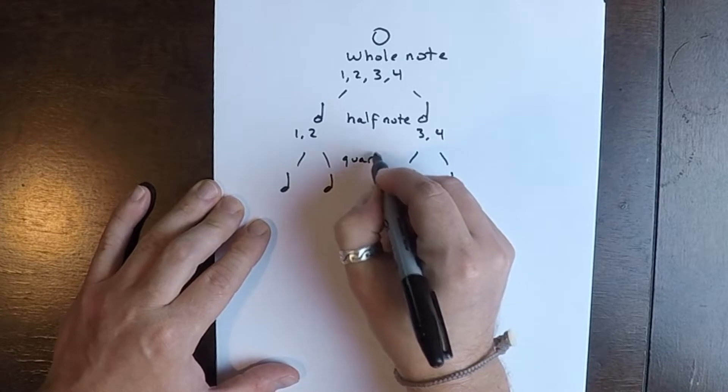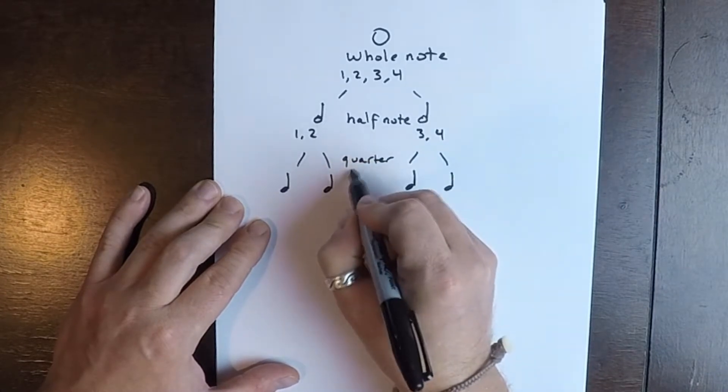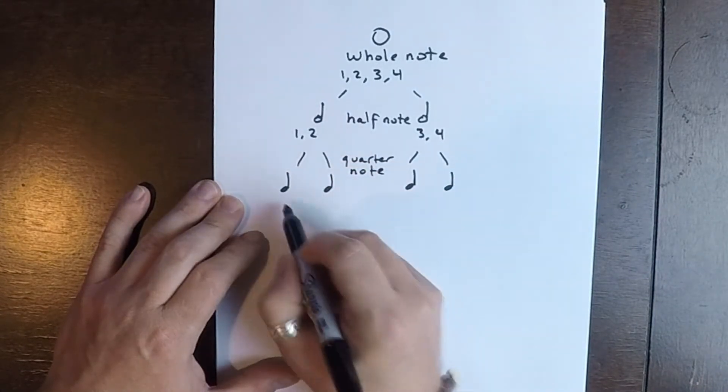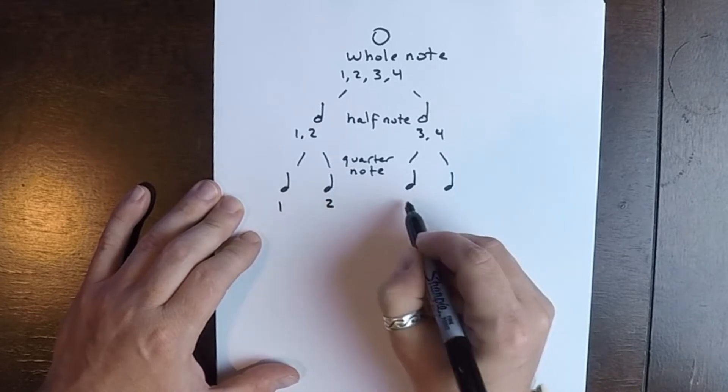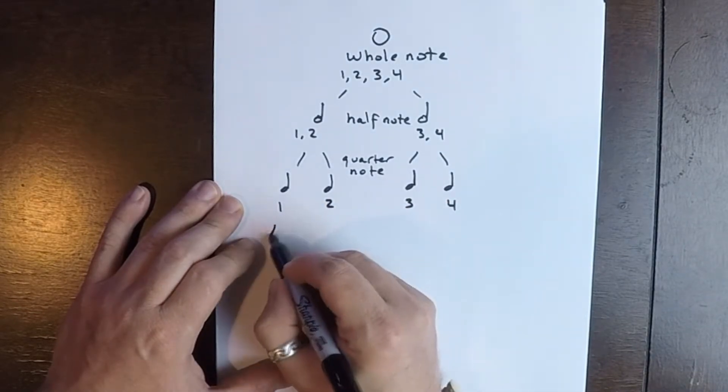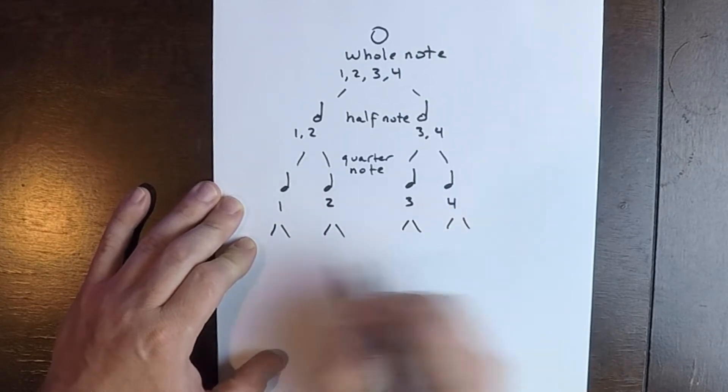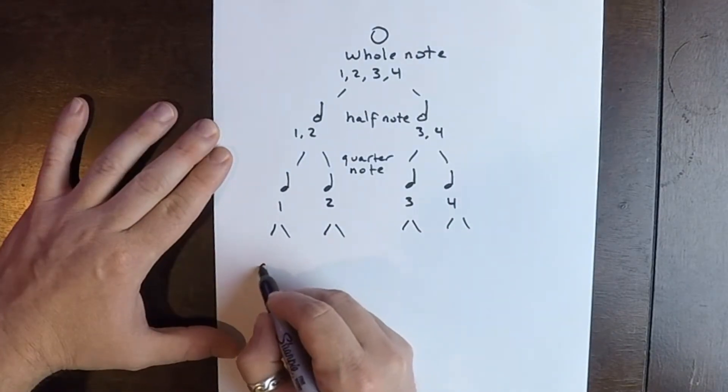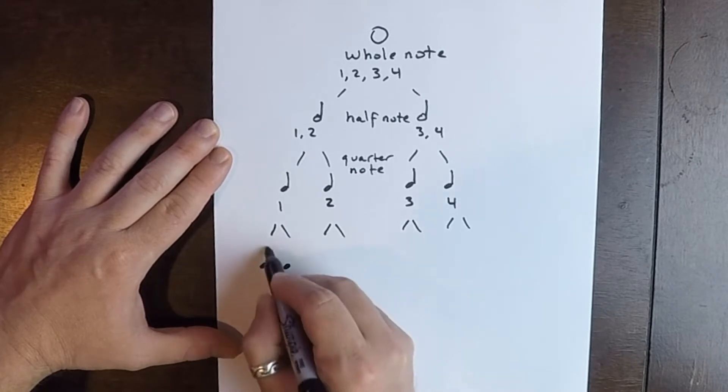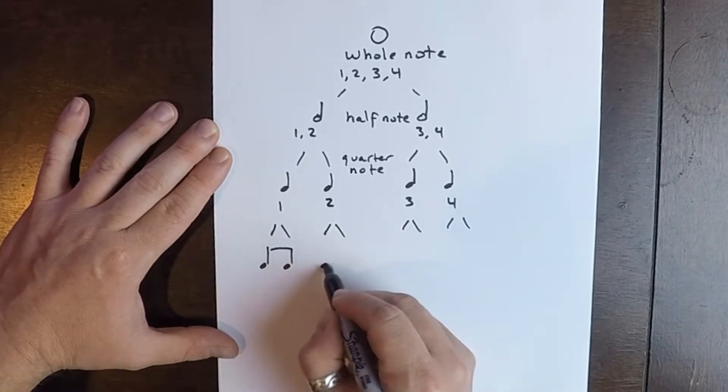So as you can see, we have four quarter notes. These get counted one, two, three, four. Now our quarter notes will break down into eighth notes.